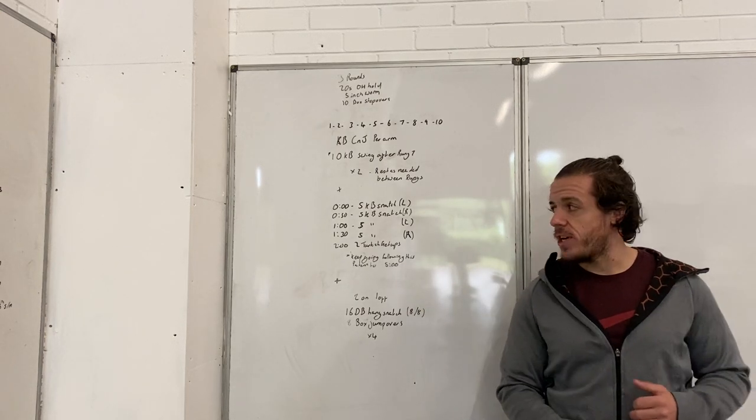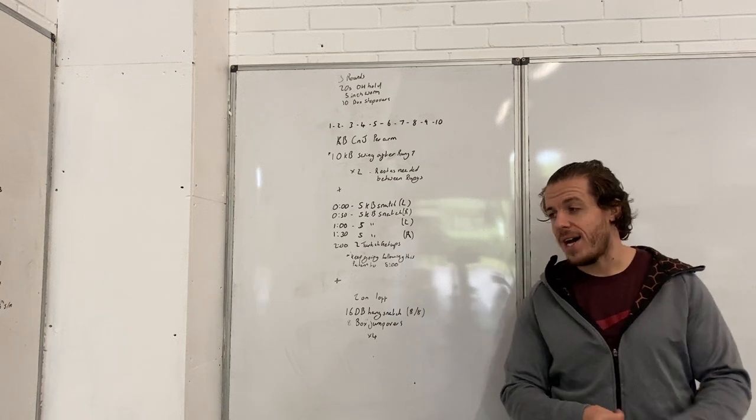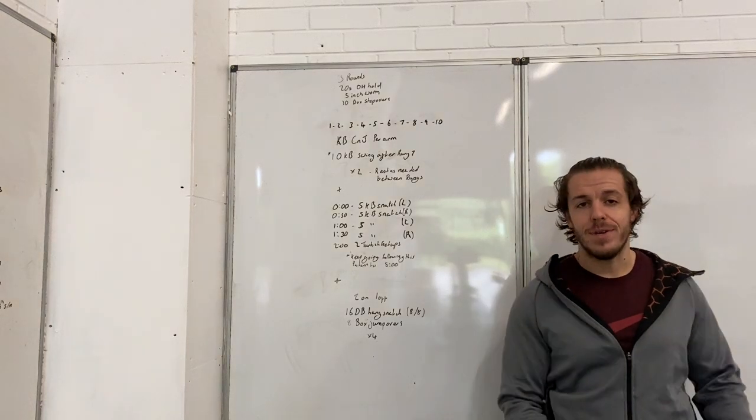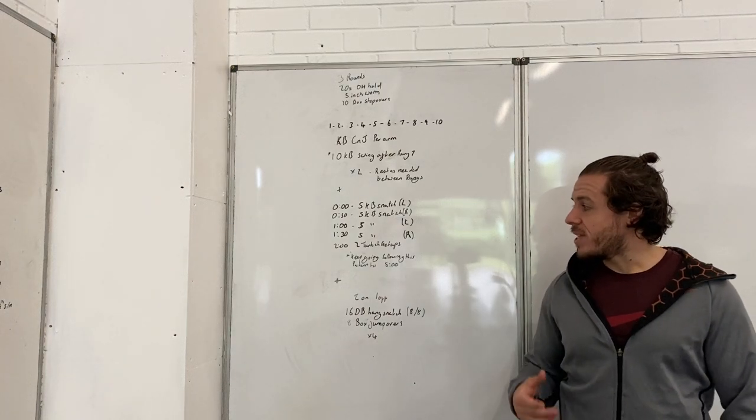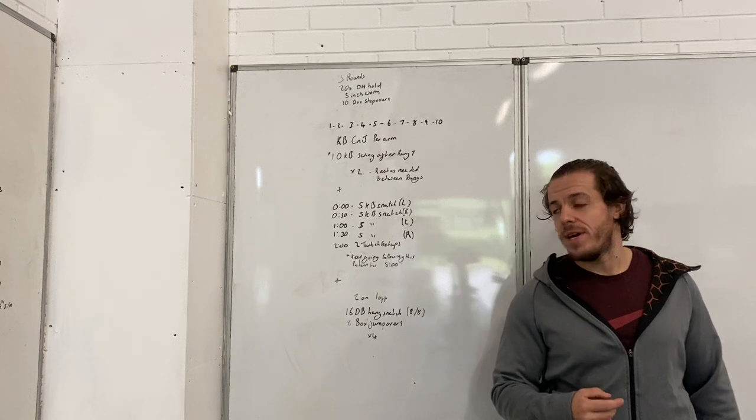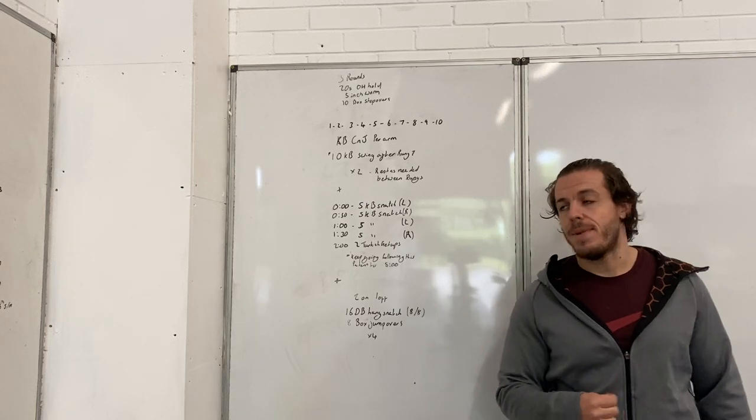Then we're going to do some kettlebell snatch, more kettlebell skill work. In the first 30 seconds you're going to do five reps on your left arm, in the second 30 seconds you're going to do five reps on your right arm. Keep doing that until you've done 40 total reps, so that's all the way up to the five minute mark.